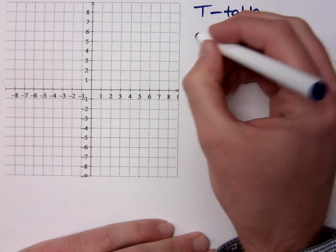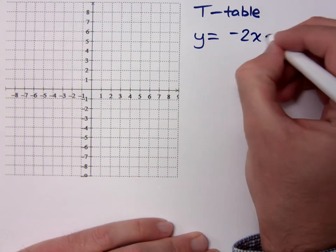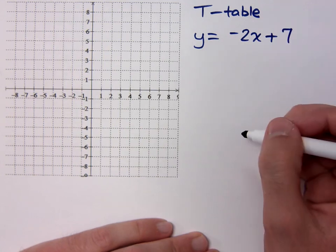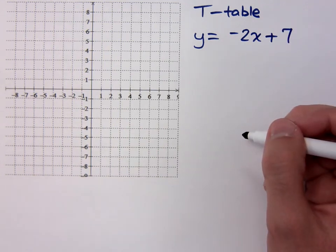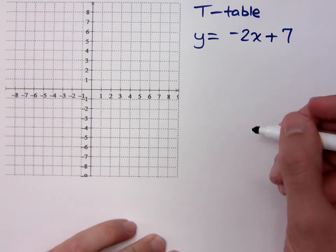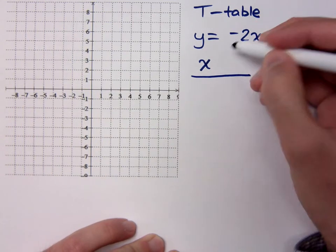Yeah. So it really works best if you already have y solved for, if you have one of the variables by itself. So if I take y equals negative 2x plus 7, okay?